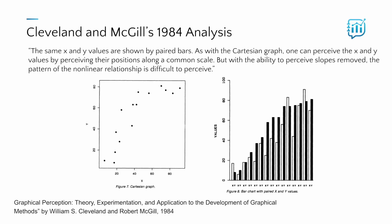But this is actually where the trouble starts for our courageous couples. As Cleveland and McGill pointed out in their 1984 paper, it can be difficult to use paired bars to discern the relationship between two different variables. They show a scatter plot on the left and a paired bar chart on the right, noting that while one can perceive x and y values by position along a common scale in both, with the ability to perceive slopes removed, the pattern of the non-linear relationship is difficult to perceive with the paired bar chart.